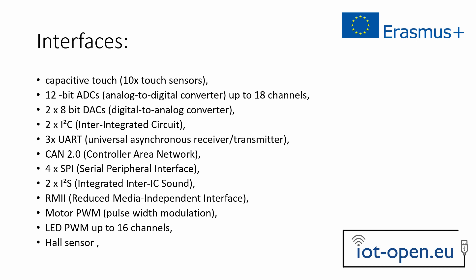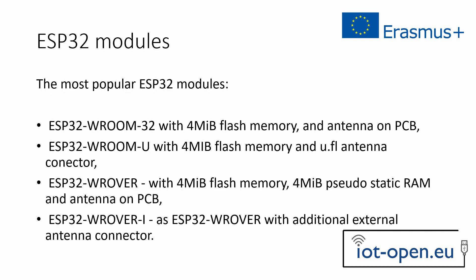The company also manufactures ready-made modules using the processes above. These models combine the ESP32 microcontroller and additional components mounted on the PCB with an EM shield. Available variants include: ESP32-WROOM-32 with 4MB flash memory and an on-board PCB antenna; ESP32-WROOM-U with 4MB flash memory and an ultra-fine small antenna connector; ESP32-WROVER with 4MB flash memory, 4MB pseudo-static RAM, and a PCB antenna; and ESP32-WROVER-I, same as ESP32-WROVER but with an additional external antenna connector.